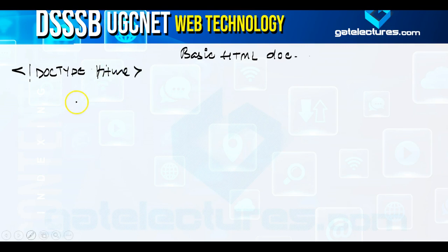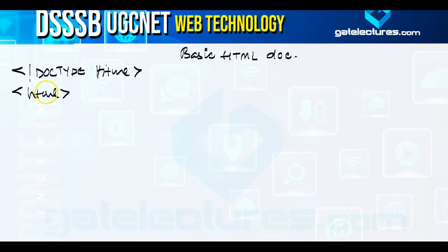The first tag is the DOCTYPE declaration. This tag defines the document type and the HTML version you are using in your HTML code. The next is the HTML tag, which is the root element — you enclose the complete HTML document within it. Then there is the head tag, which represents the document header where you can keep other tags like title.